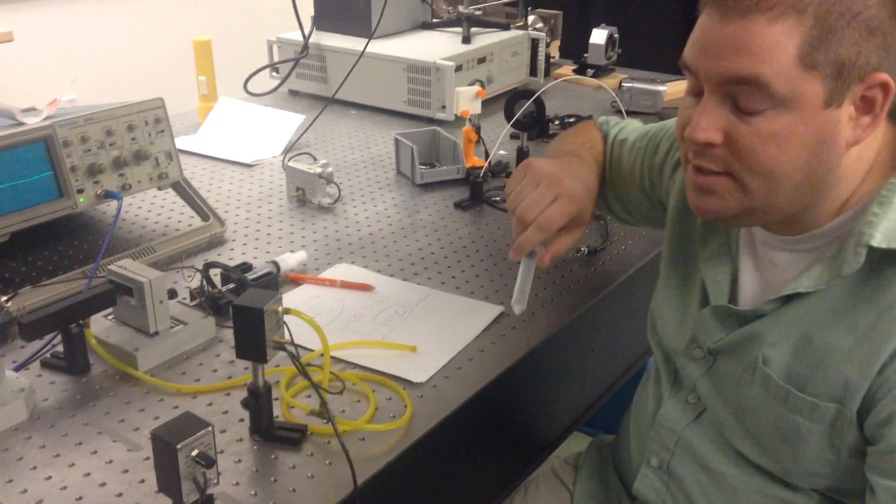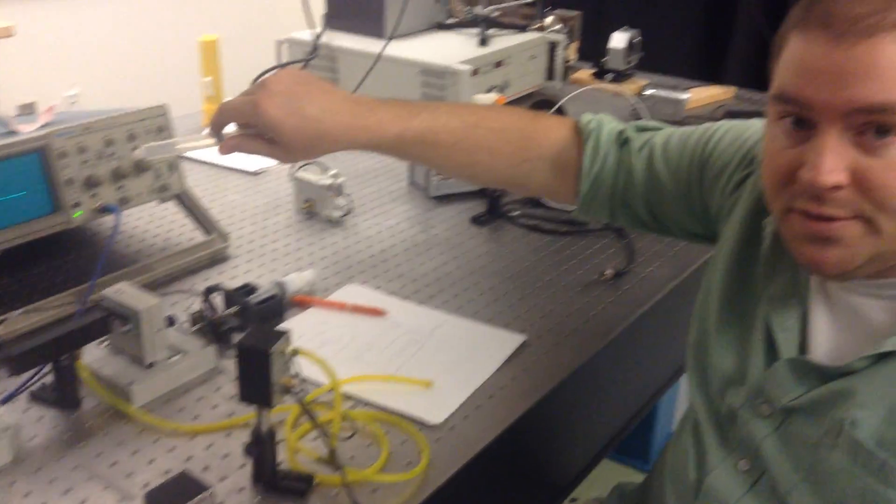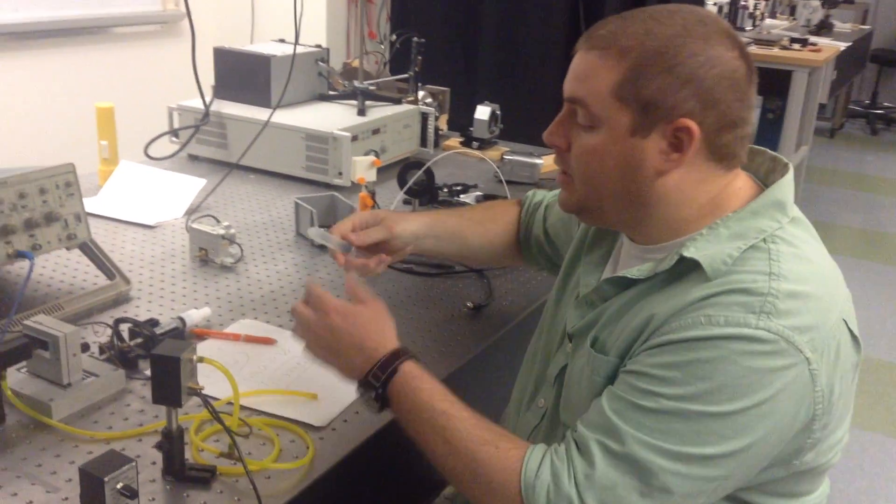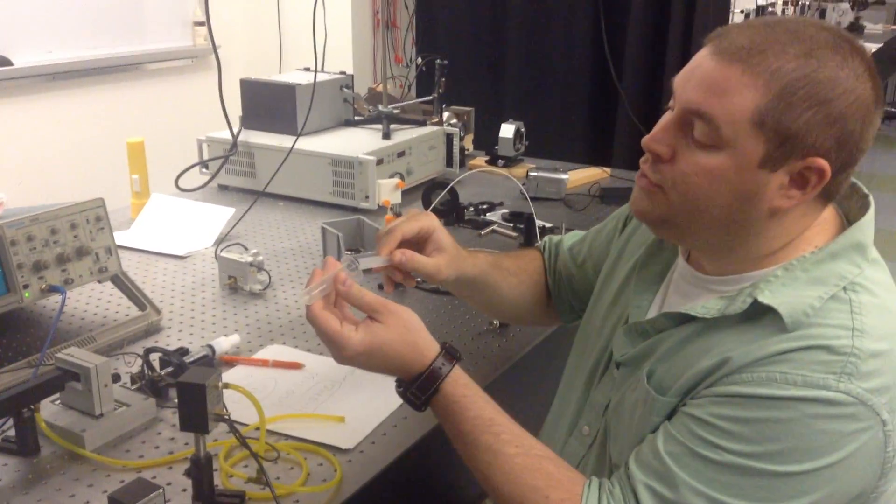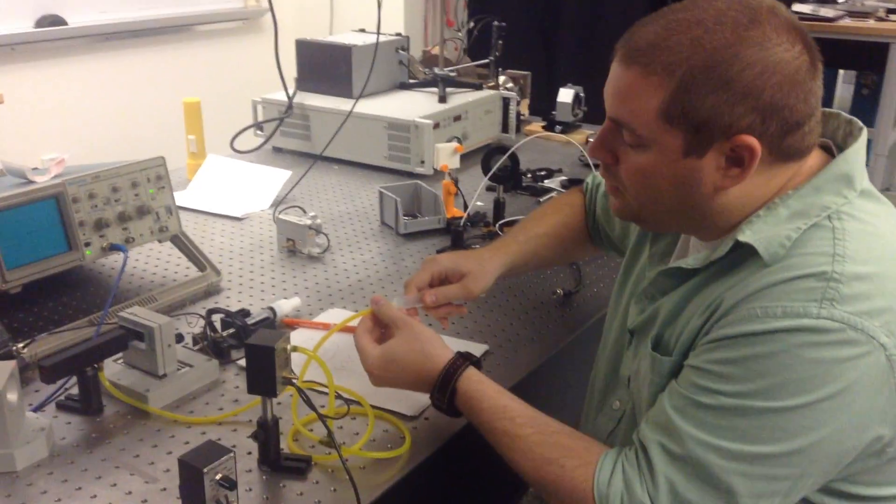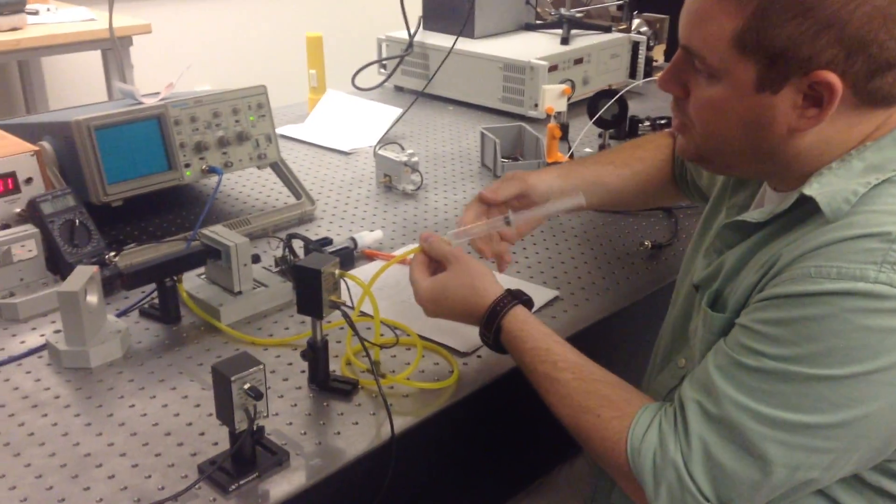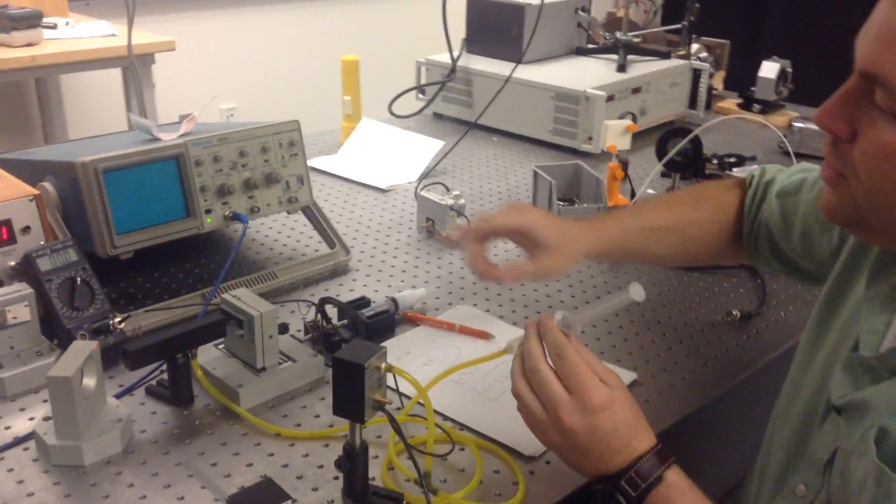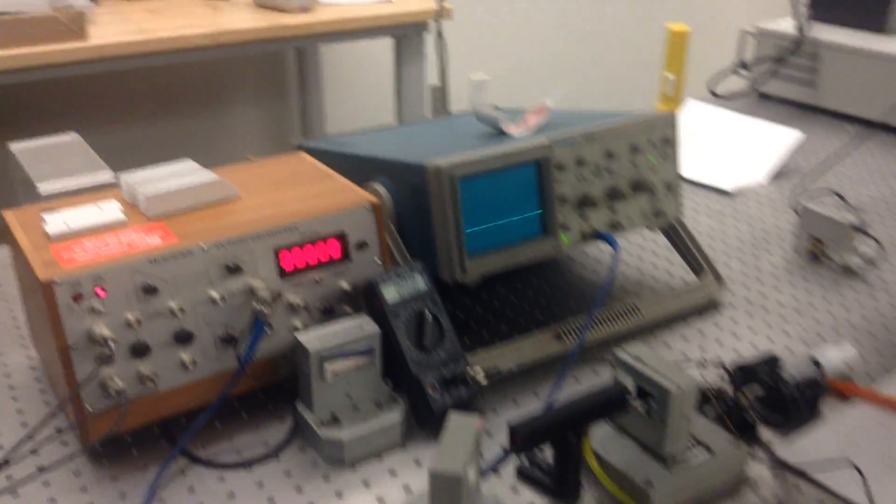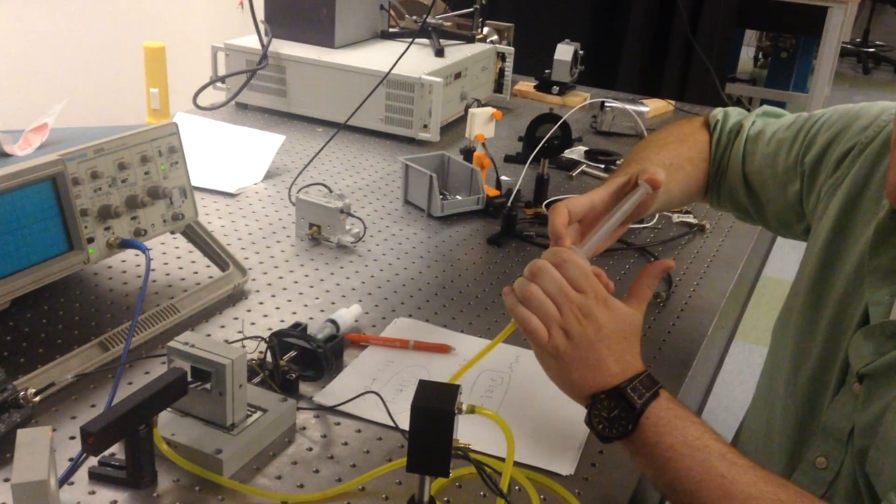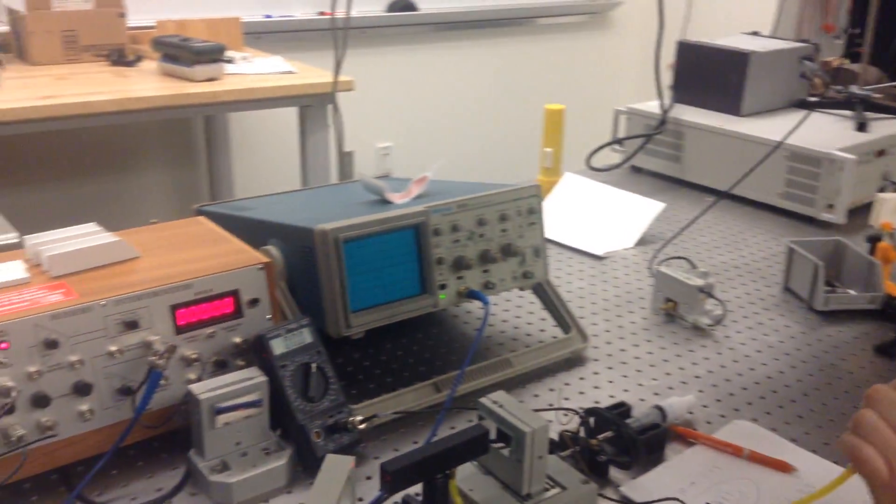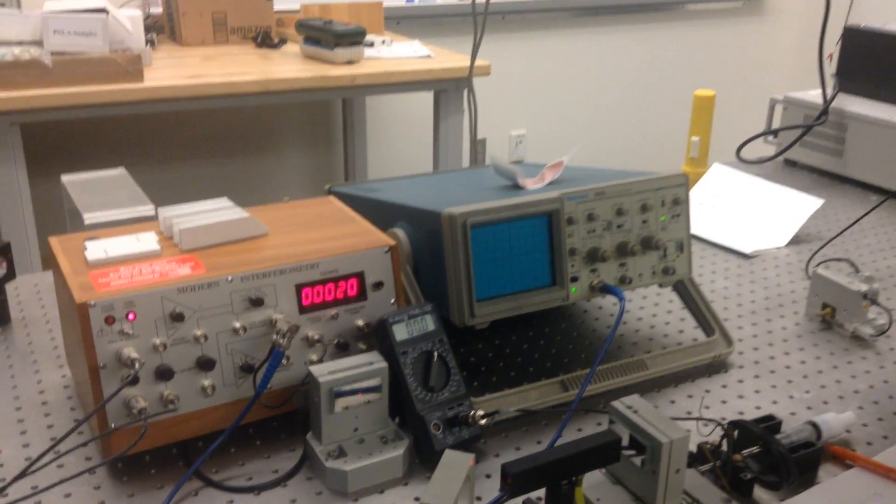So what we're looking to find here is the number of fringes and the change in pressure that's in our air cell. Alright, so we're going to start with the tube full of air. Then you're going to connect it to the hose that's connected to your pressure sensor. And then before you do that, you want to make sure you hit the reset button. And then you're going to slowly push the plunger in.